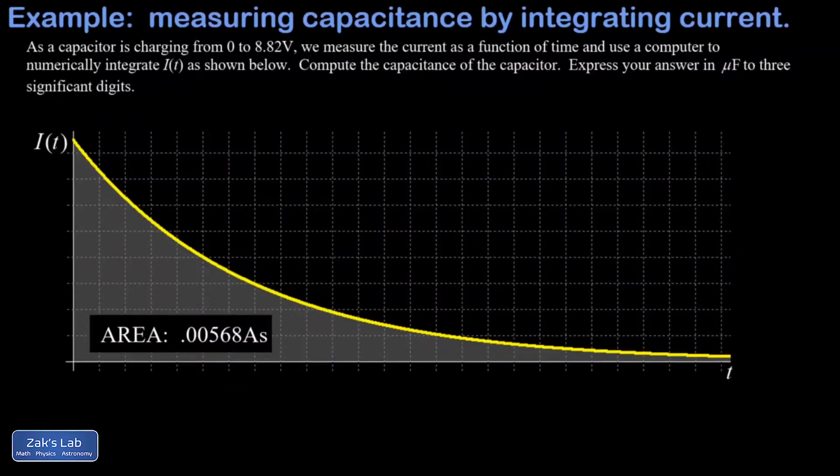In this video we're looking at a calculation where we're integrating the current in order to find the total charge on a capacitor. The capacitor has charged from 0 volts to 8.82 volts and we're measuring current as a function of time and inputting this into a computer.